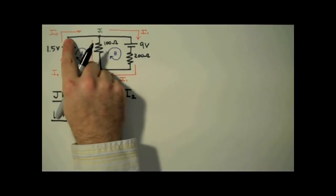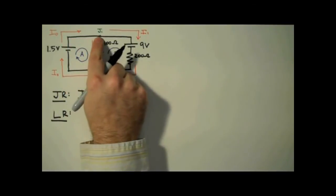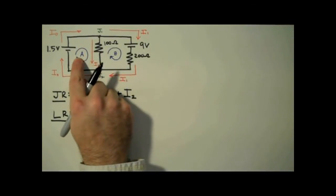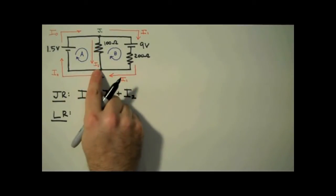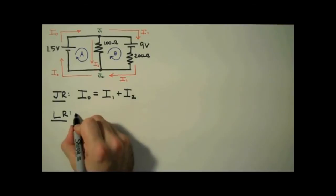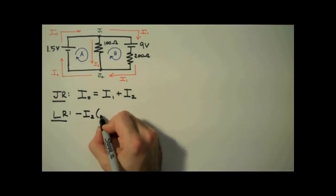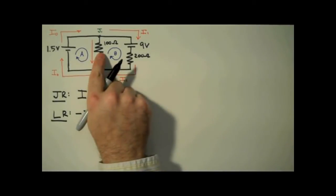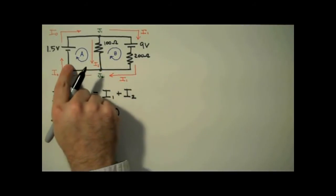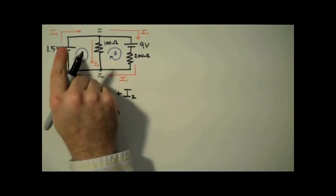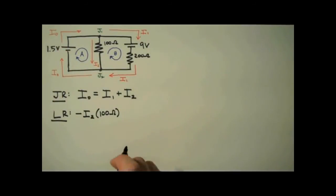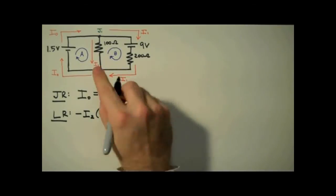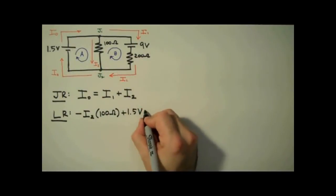Starting in the upper left-hand corner, we're going to move clockwise around loop A. The first component we get to is the 100 ohm resistor. We're traveling clockwise, so we're coming down this leg, moving with the direction of the current. This means we're going to have a voltage drop across the resistor — negative IR. So I write negative I2 times 100 ohms. We continue clockwise to the 1.5 volt battery, moving from negative to positive — a voltage lift, positive V. So I write plus 1.5 volts. That's the last component in this loop, so I set it equal to zero.